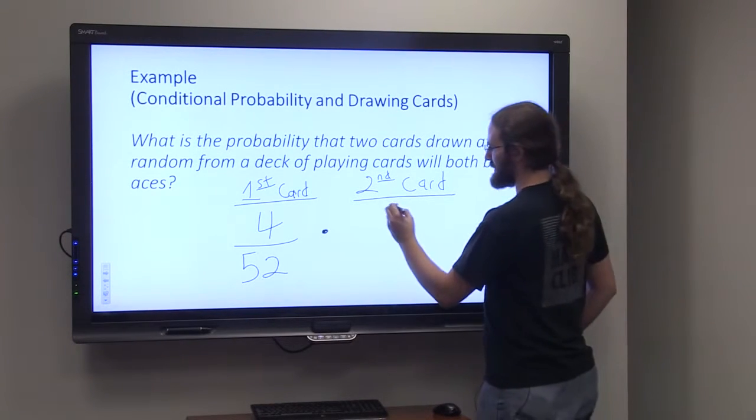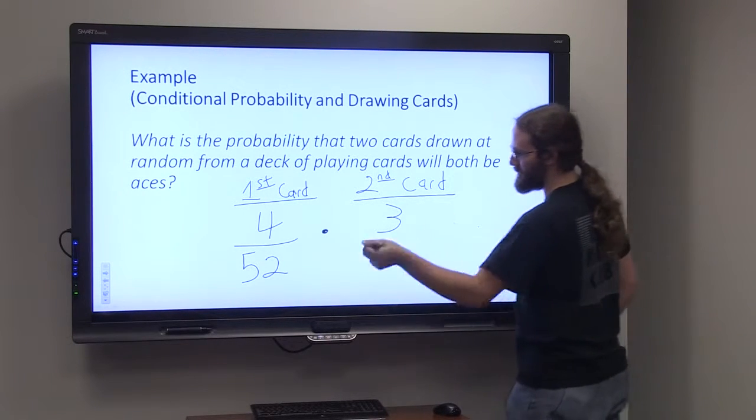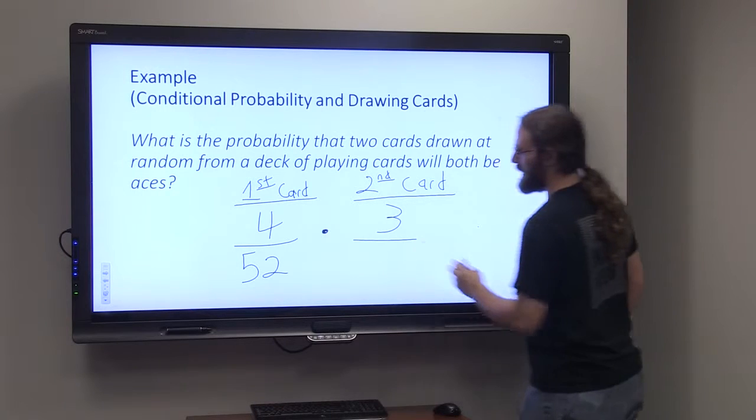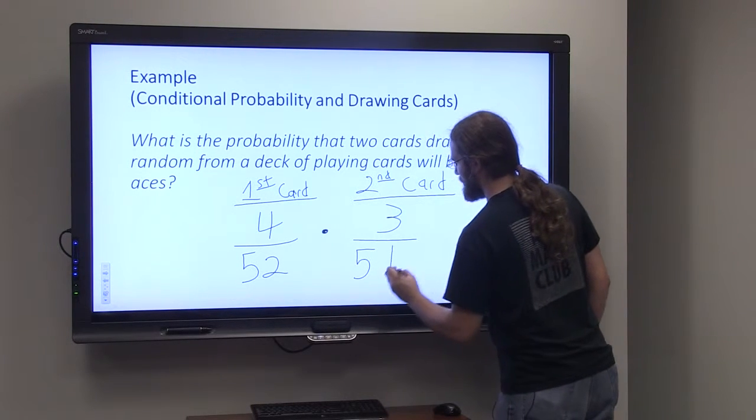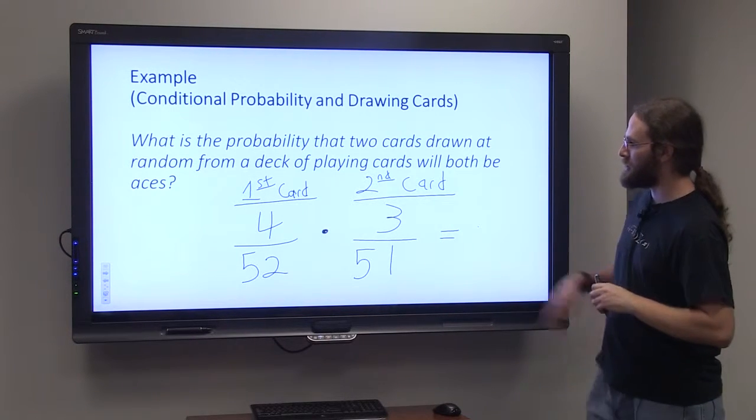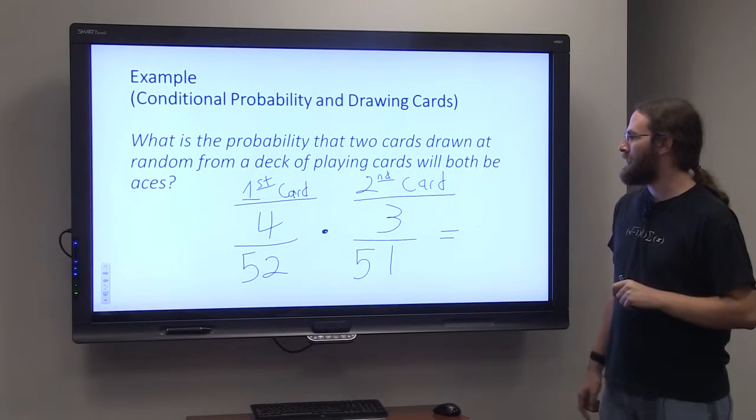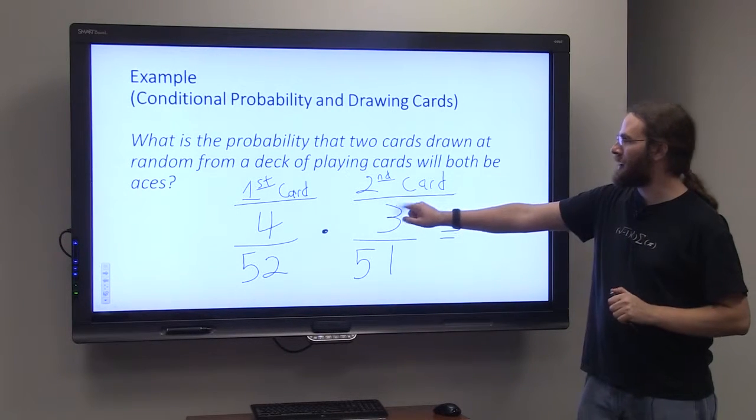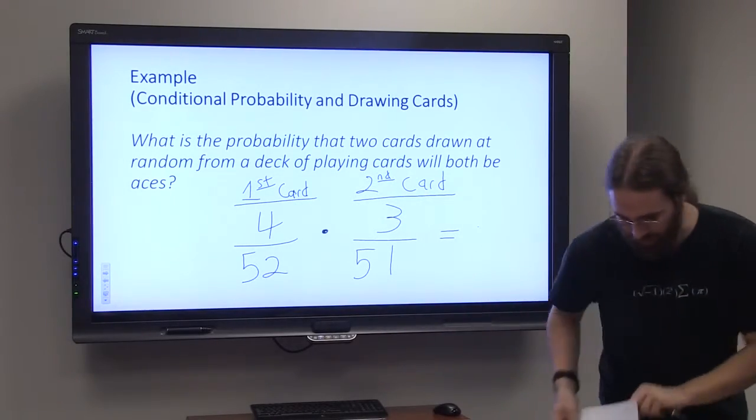So I would have three aces. One of the aces was removed in the first set, the first draw, and then I would have 51 cards left. So you see how this changed, and that's because the second card is conditional on the first card.